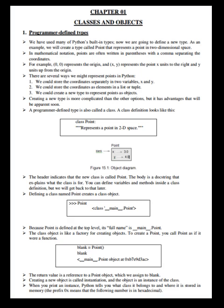Classes and Objects. Programmer Defined Types. We have used many of Python's built-in types. Now we are going to define a new type. As an example, we will create a type called Point that represents a point in two-dimensional space. In mathematical notation, points are often written in parenthesis with a comma separating the coordinates. For example, (0, 0) represents the origin and (x, y) represents the point x units to the right and y units up from the origin. There are several ways we might represent points in Python: we could store the coordinates separately in two variables x and y, store them as elements in a list or tuple, or create a new type to represent points as objects. Creating a new type is more complicated than the other options, but it has advantages that will be apparent soon.